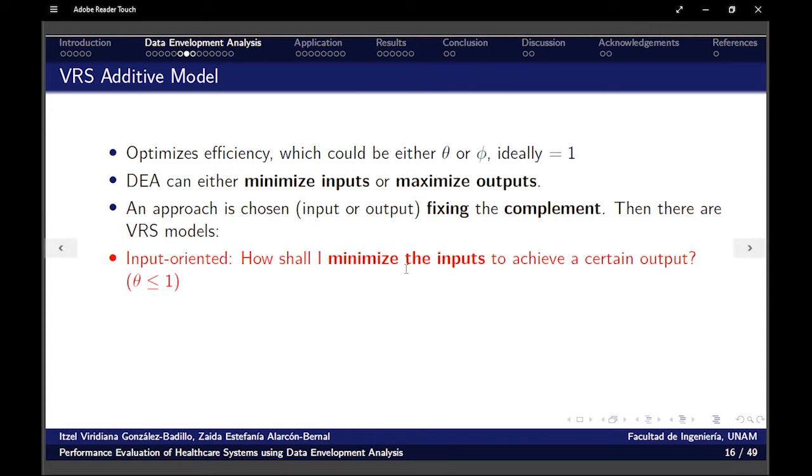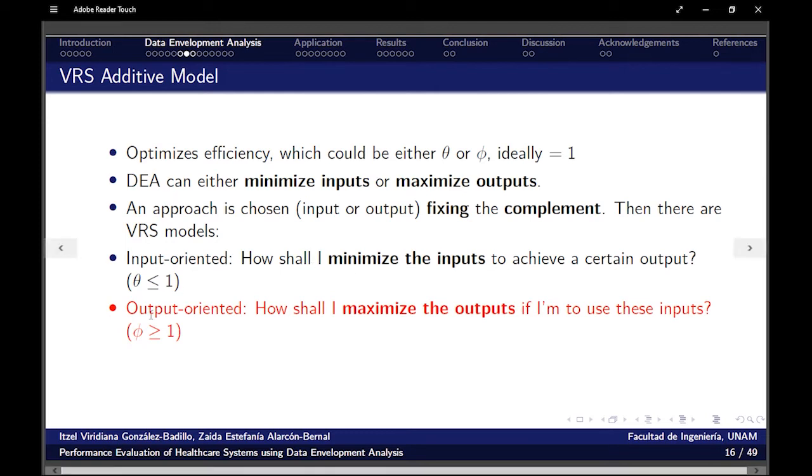An approach will be chosen, so I'm going to fix the other part, the complement. We're going to have the input orientation, where the question will be, how shall I minimize the inputs to achieve a certain output? What do I need so I can do this something? Or output-oriented, how shall I maximize the output if I'm to use these inputs? How can I do the best if this is what I have? Note the values of the efficiency that we would have in each case. For input will be less or equal to one. For output will be greater or equal to one.